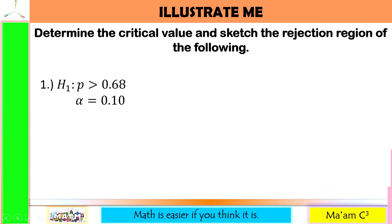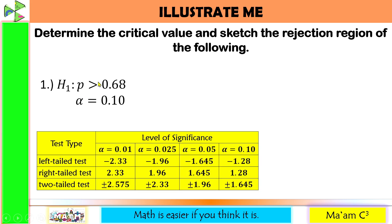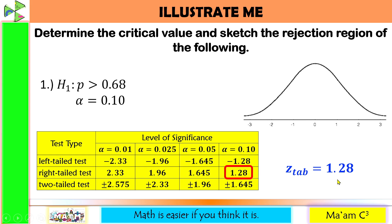Let's have another activity: Illustrate Me. Determine the critical value and sketch the rejection region of the following. Number one, we have H₁: P is greater than 0.68 with alpha equal to 0.10. To determine the critical value, we need our Z critical values. This is right-tailed with 0.10 level of significance, therefore our Z-tab is 1.28. Now let us sketch the curve, locate 1.28, label it, and shade the right tail.